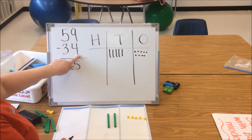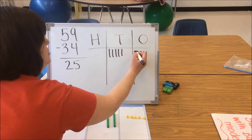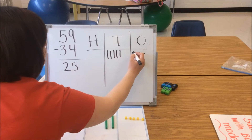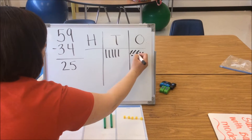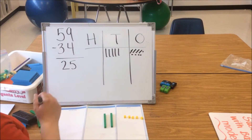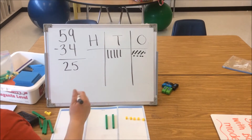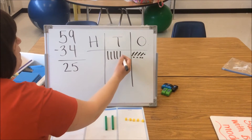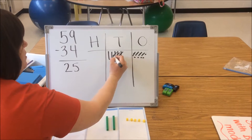Again, I start with my 1s place. I need to take away 4 ones, so students do this by simply crossing off their 1s: 1, 2, 3, 4. Then we move over to our 10s place — we have 3 tens, and we're going to cross off our 3 tens: 1, 2, 3.